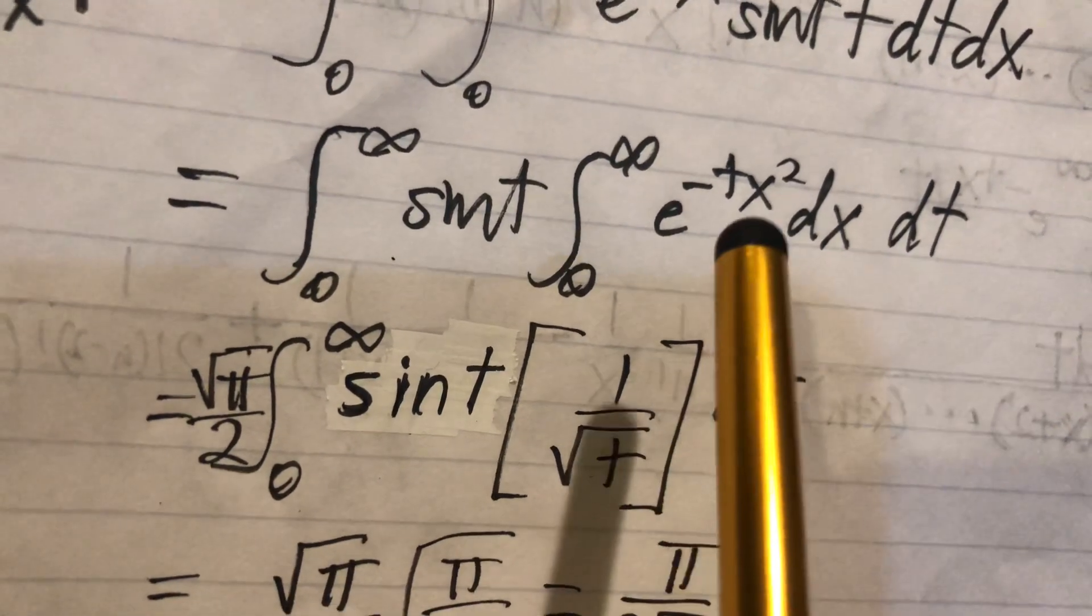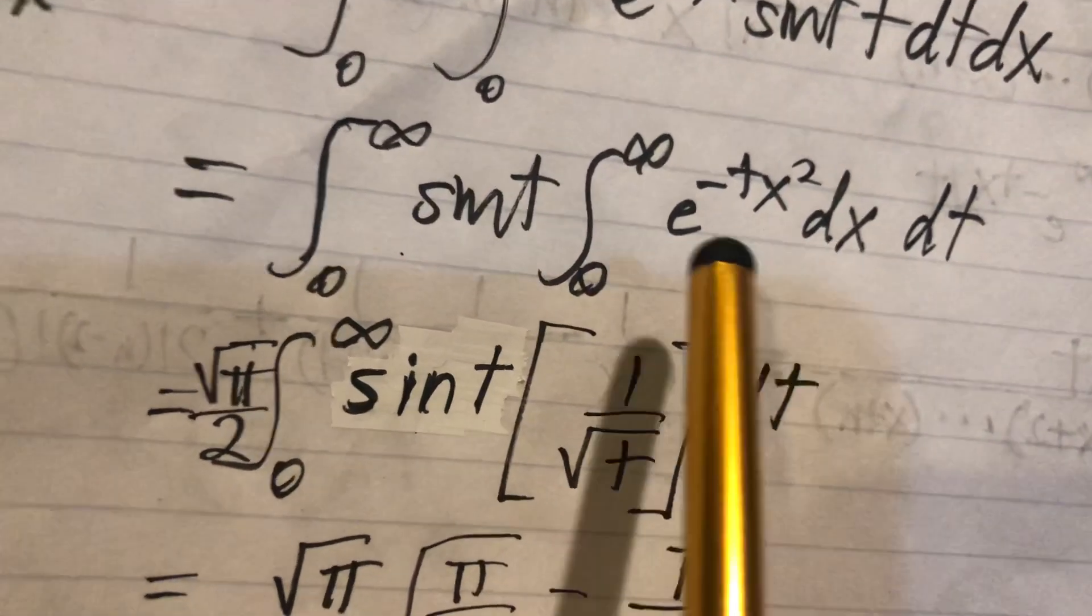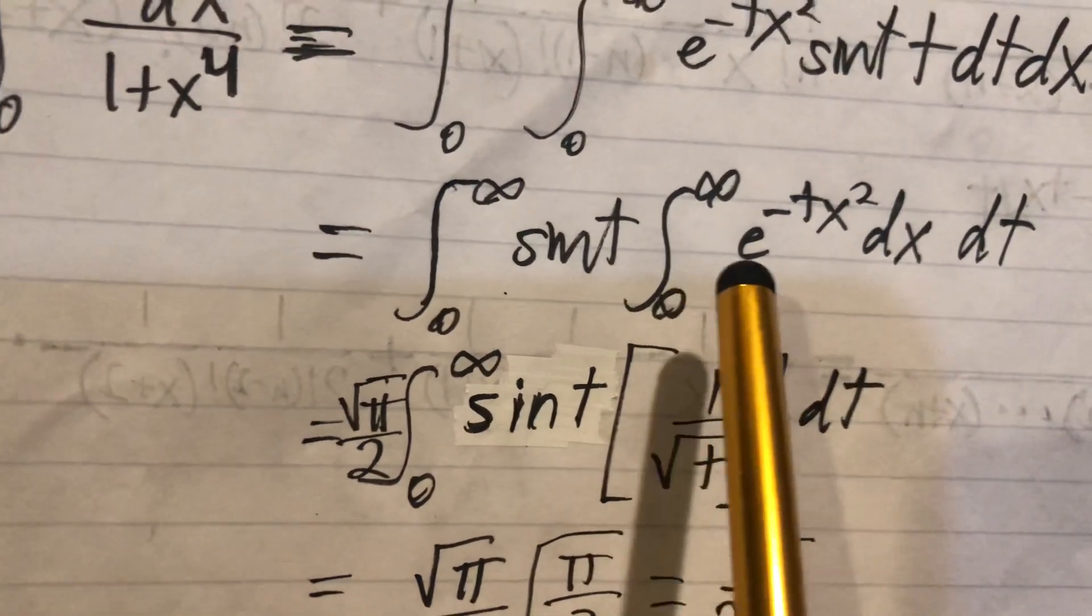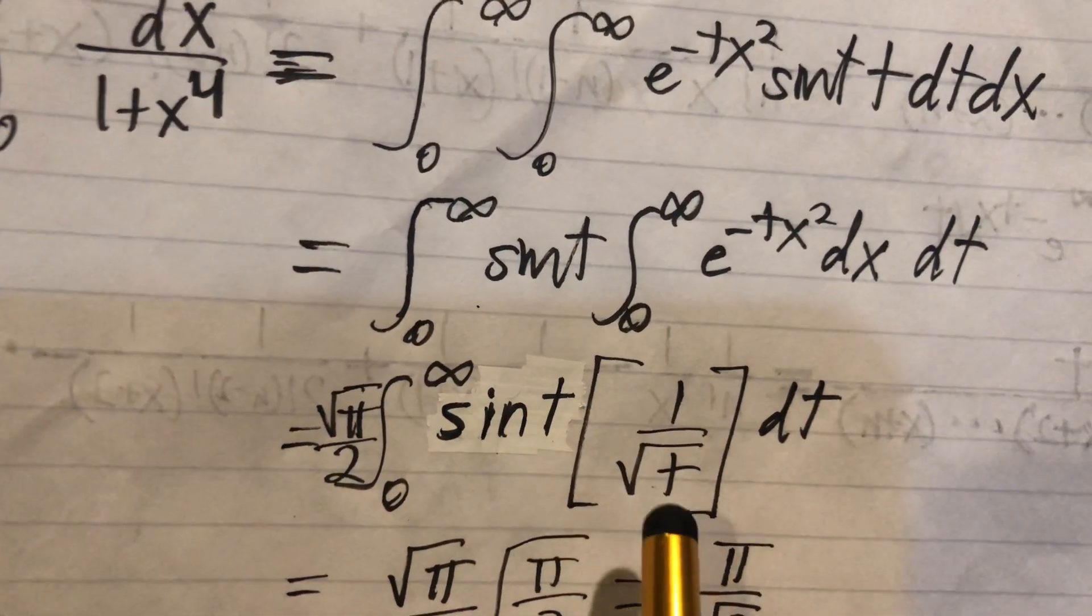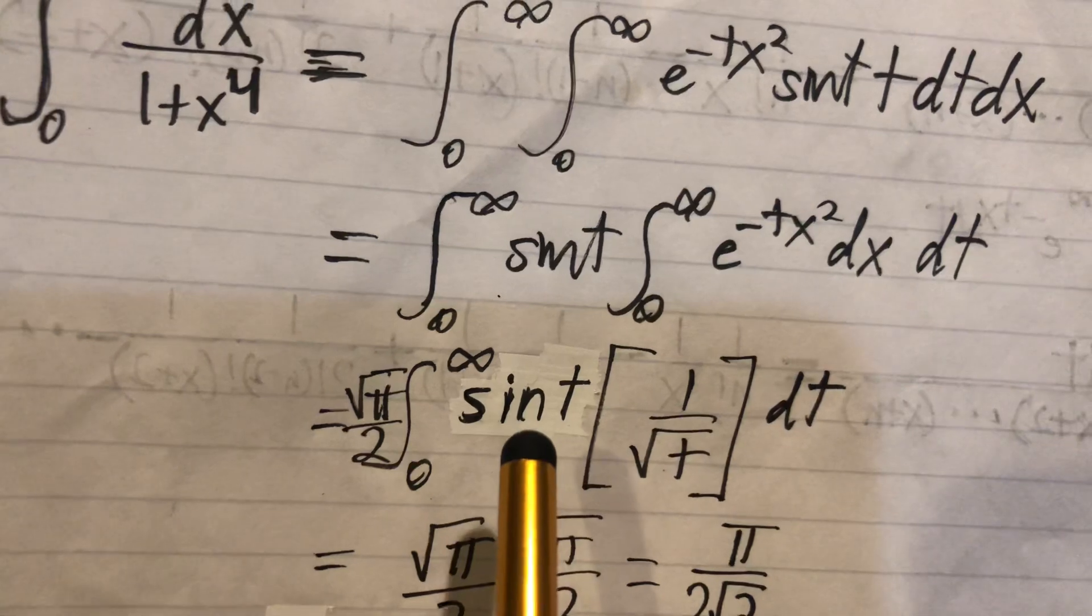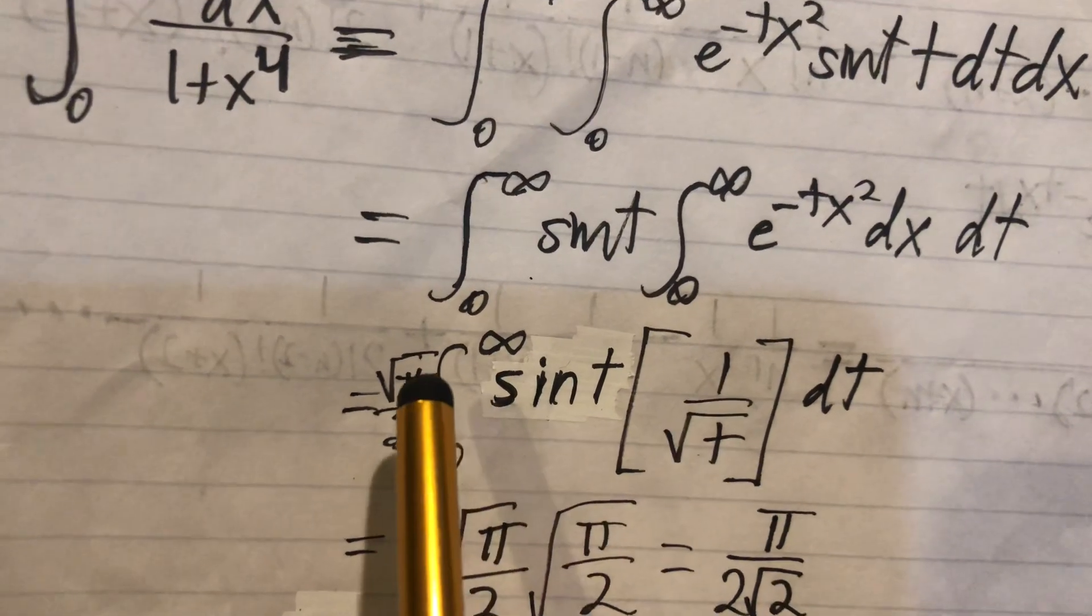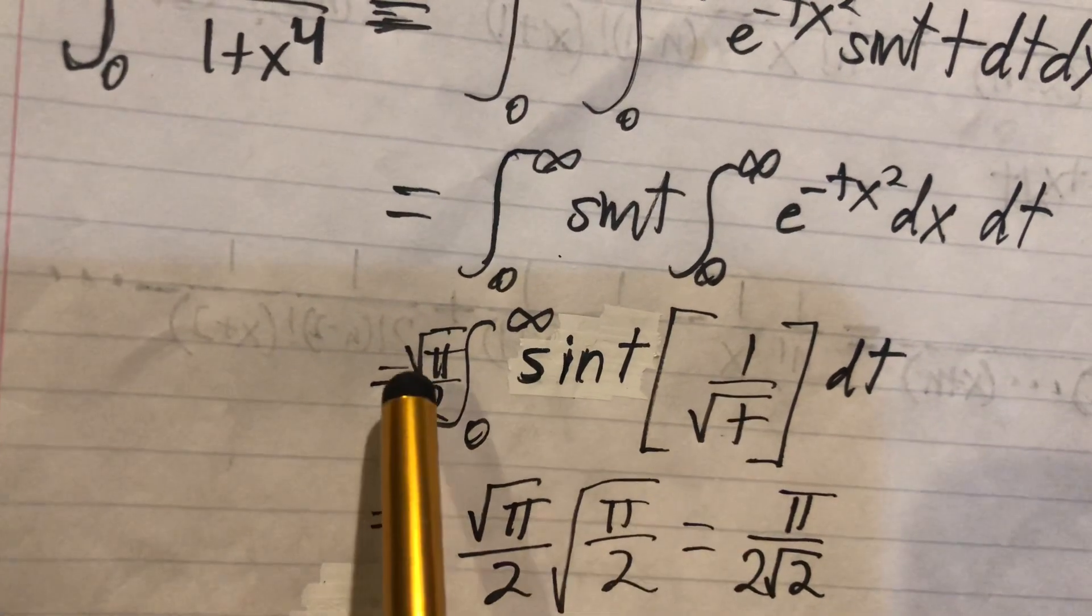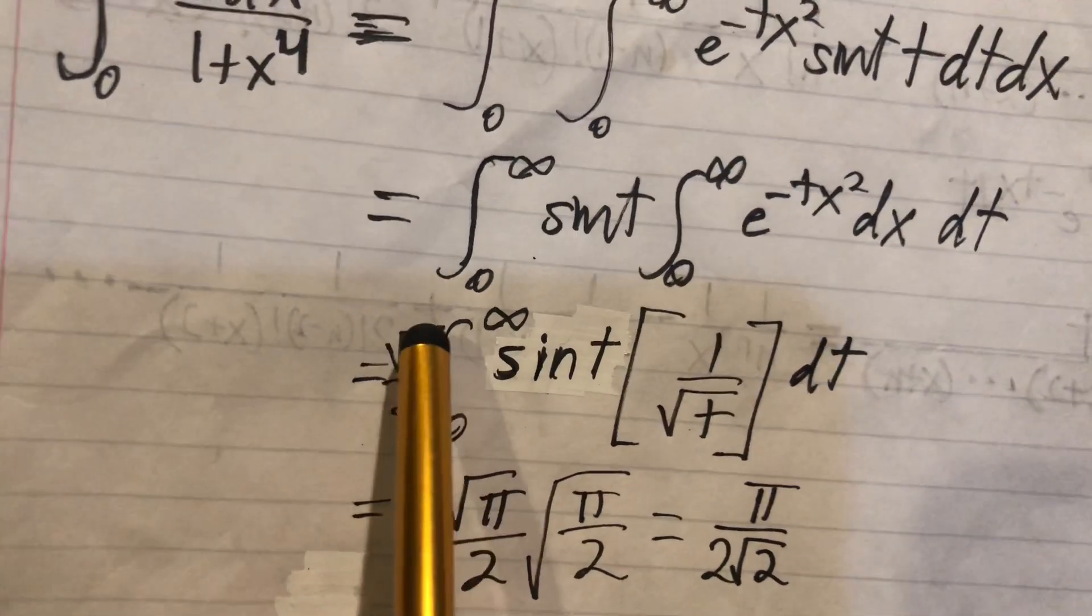I used Wolfram Alpha because we know these things fairly well, but I'm not going to take the time to do it here. So now we need to know the integral of sine t over the square root of t, and this is square root of pi over square root of 2.